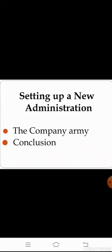Now, coming to the next topic: 'Setting Up a New Administration.' Administration refers to the process of running an organization. After the East India Company expanded, the British wanted to change their policies and adopt new strategies for their administrative work. Under this topic, we are going to learn about the company army and the conclusion of the chapter.